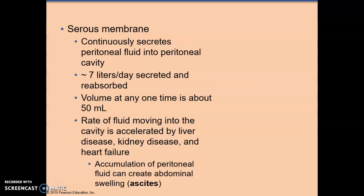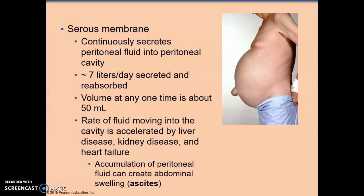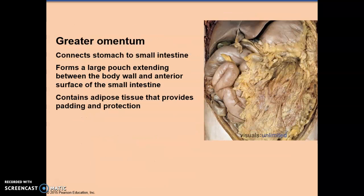This serous membrane secretes almost two gallons of fluid a day — seven liters — and the volume at any one time is about 50 mils. The rate of fluid moving into the cavities is accelerated by disease and can cause accumulation of that fluid in the peritoneal cavity, and this is called ascites.